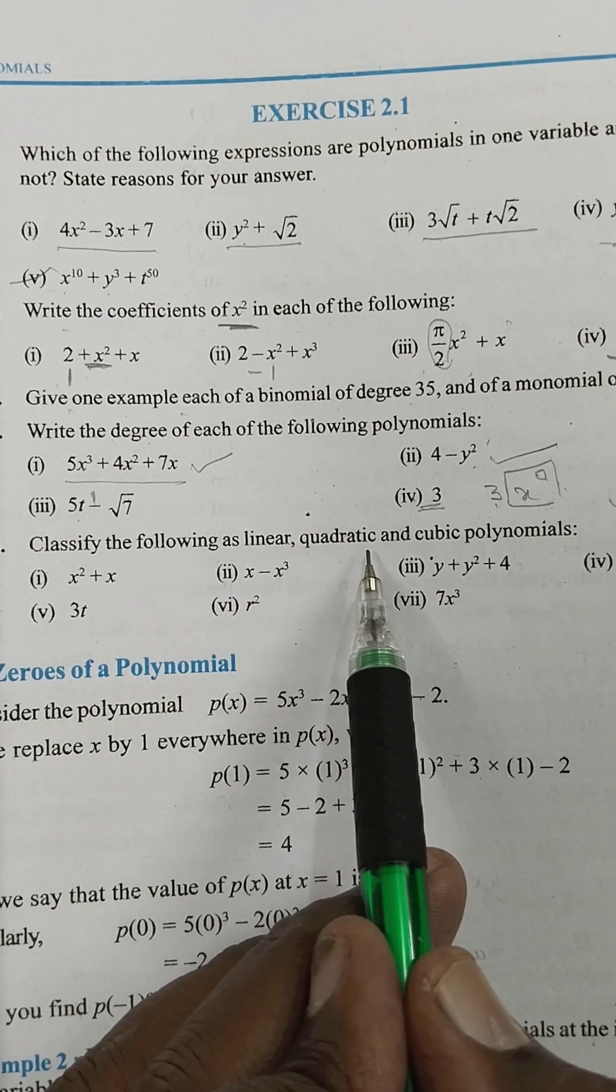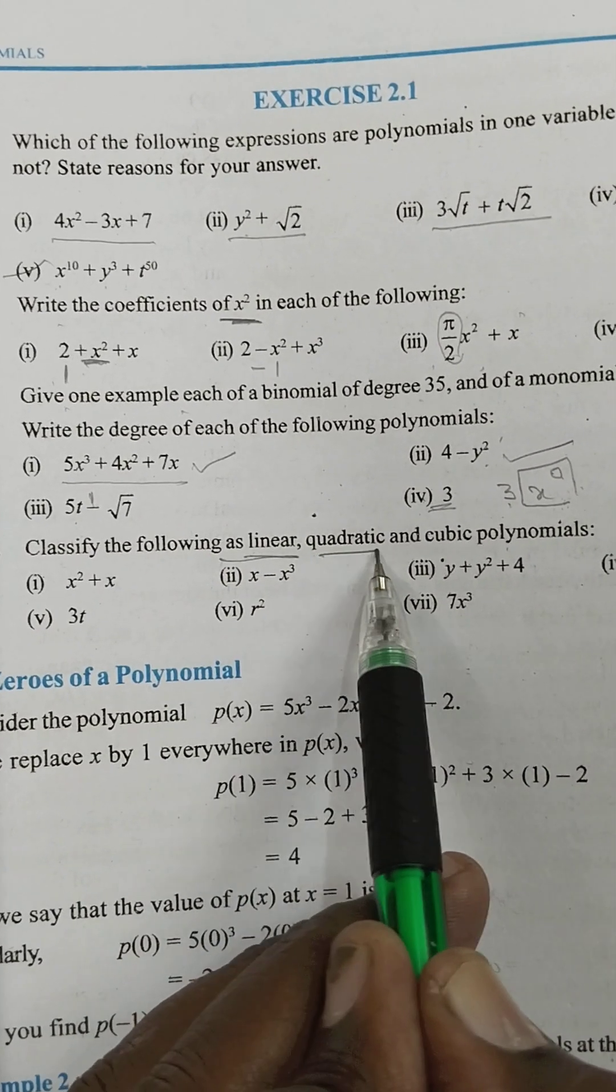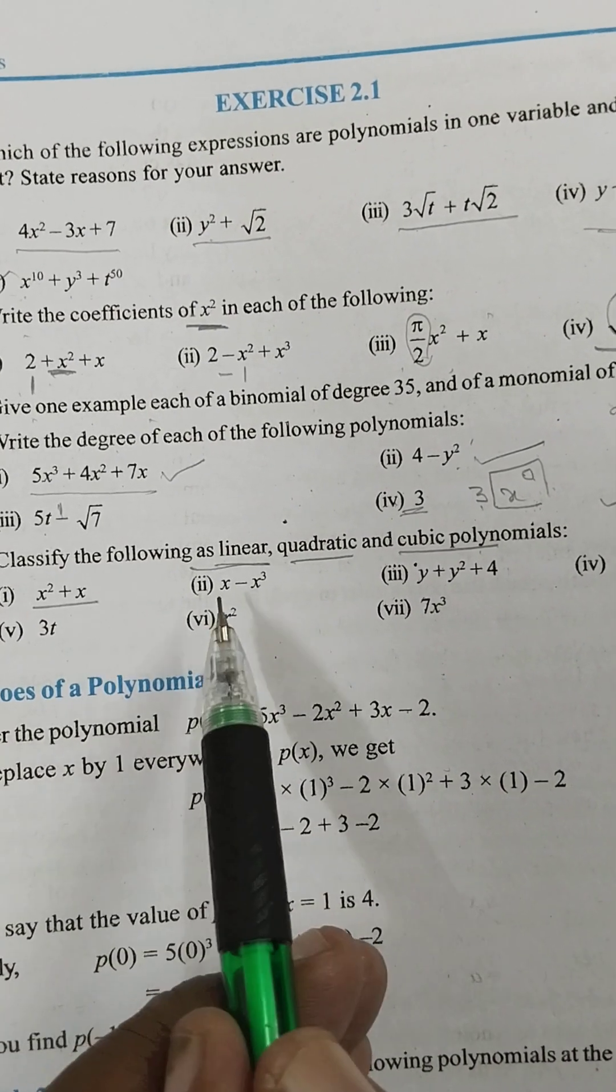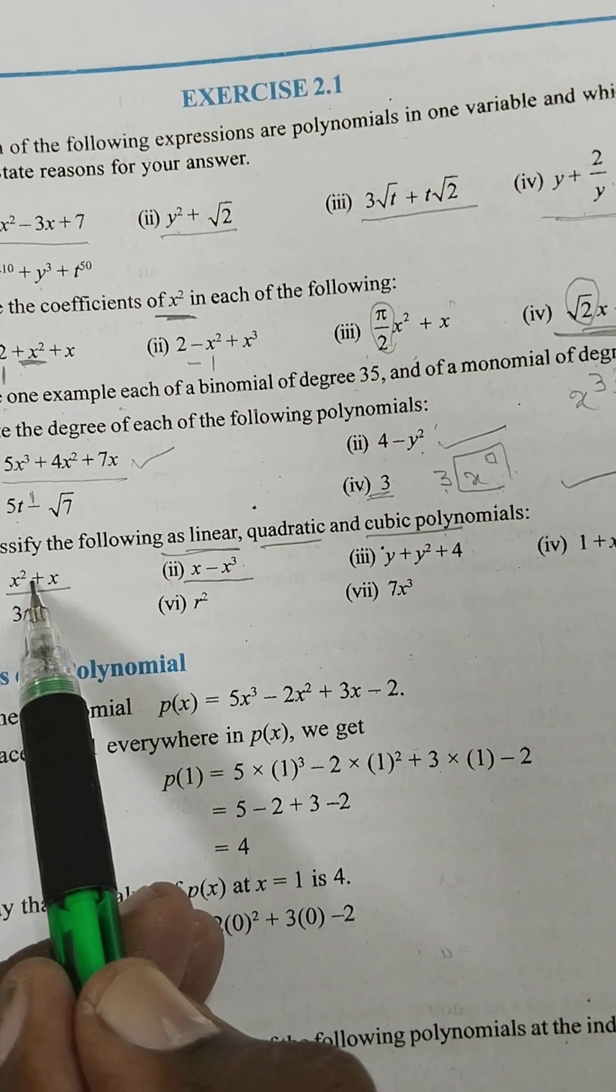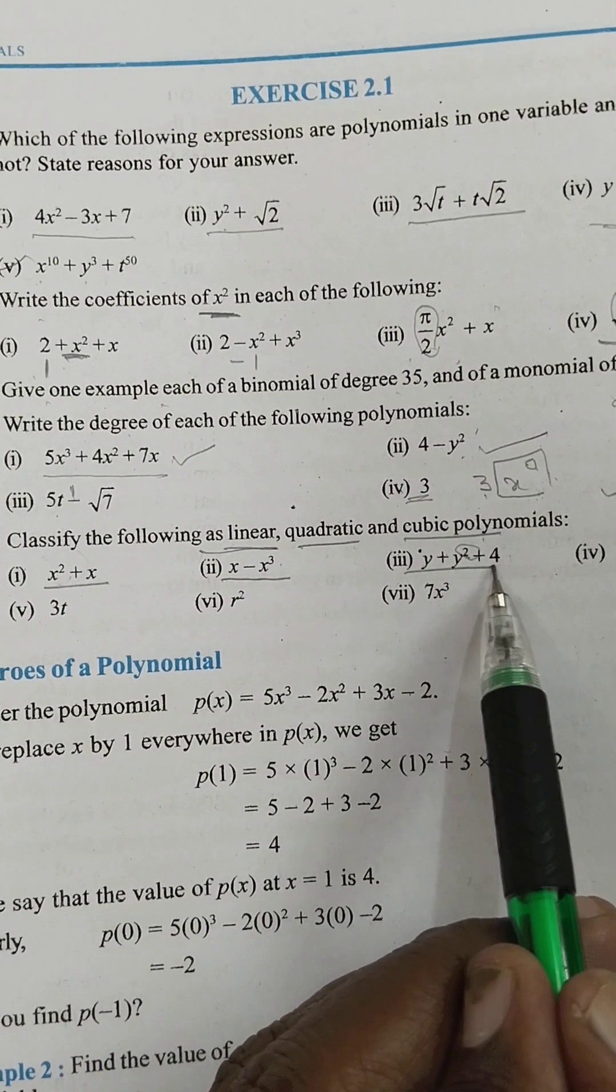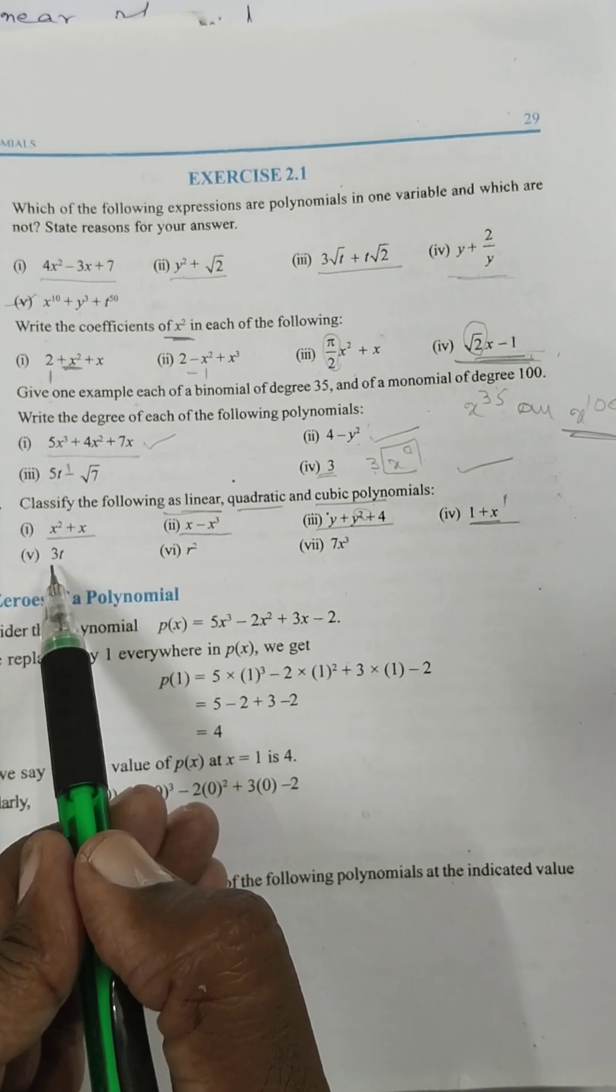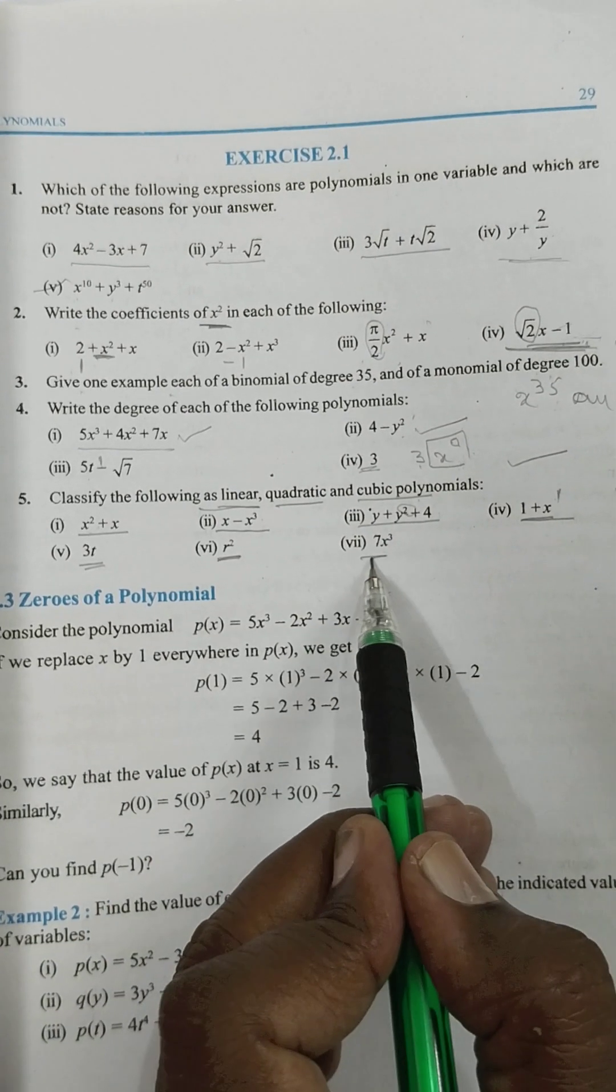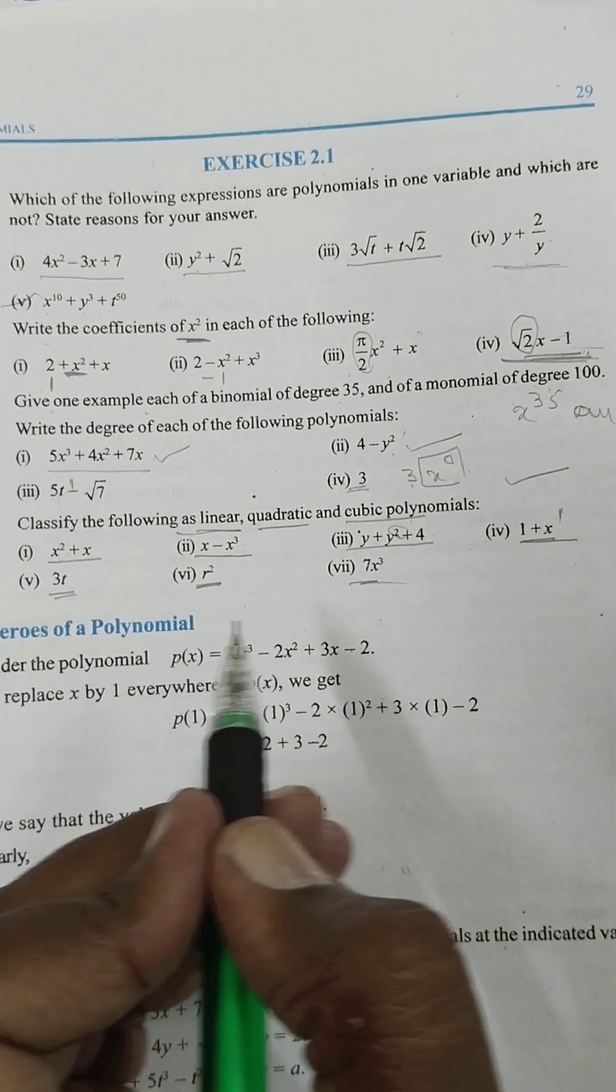Classify the following as linear, quadratic, cubic polynomials. This is the quadratic polynomial. This is the cubic polynomial because of degree 3. Here degree 2, this is the quadratic polynomial. This is a linear polynomial, only one is the power. This is the linear, this is the quadratic, this is the cubic. So try to understand and write in neat notes.